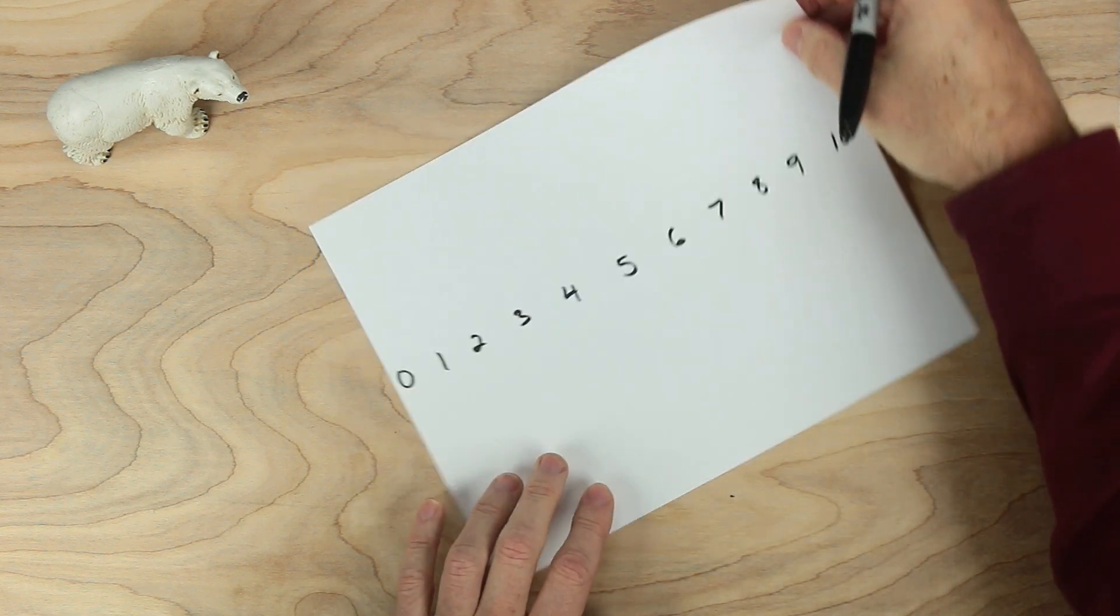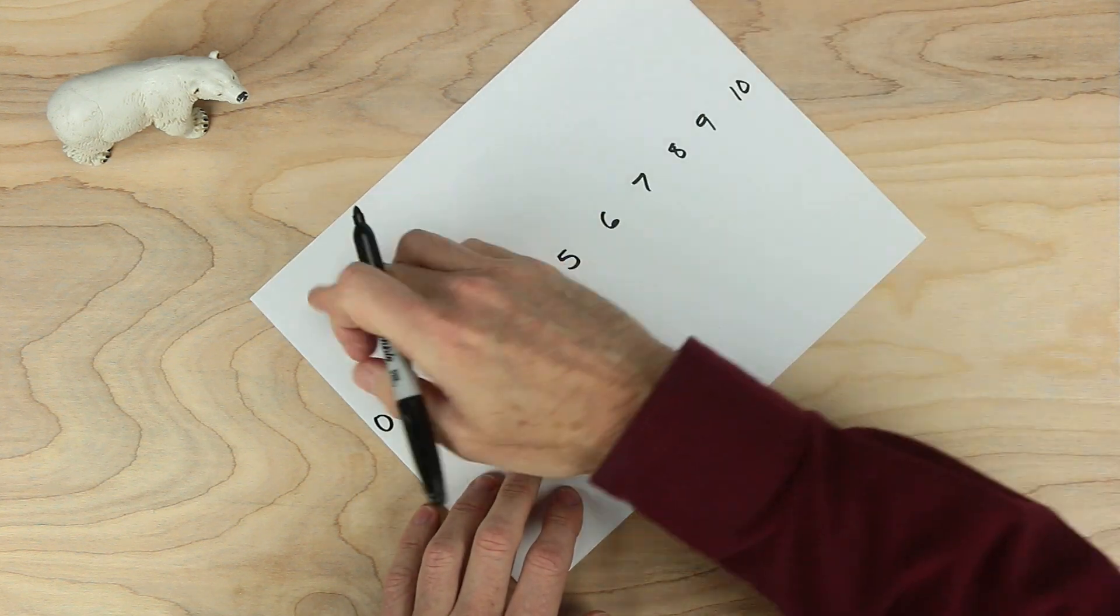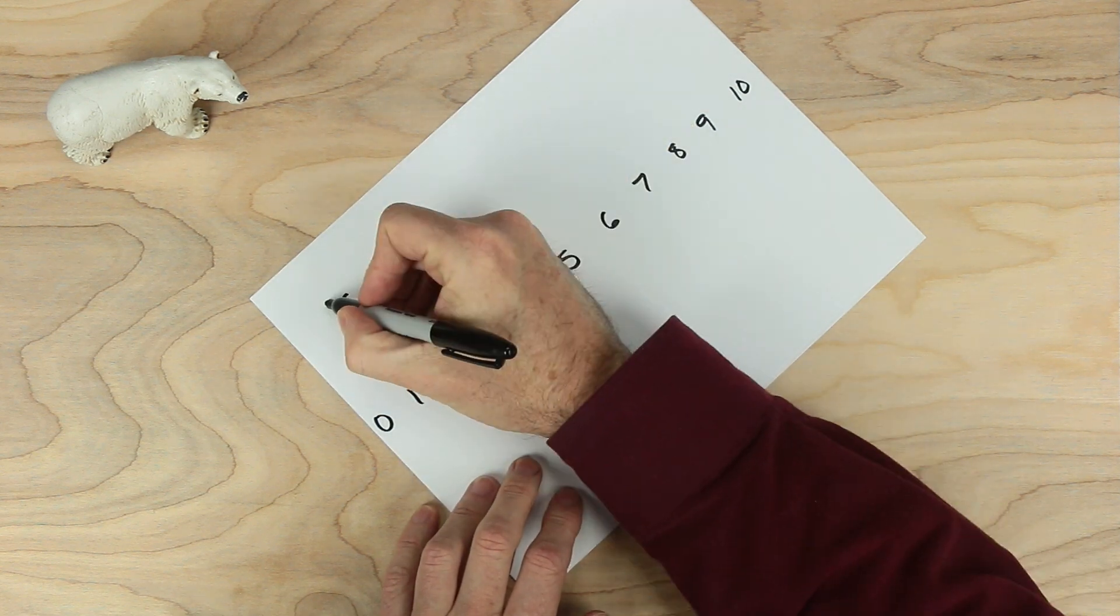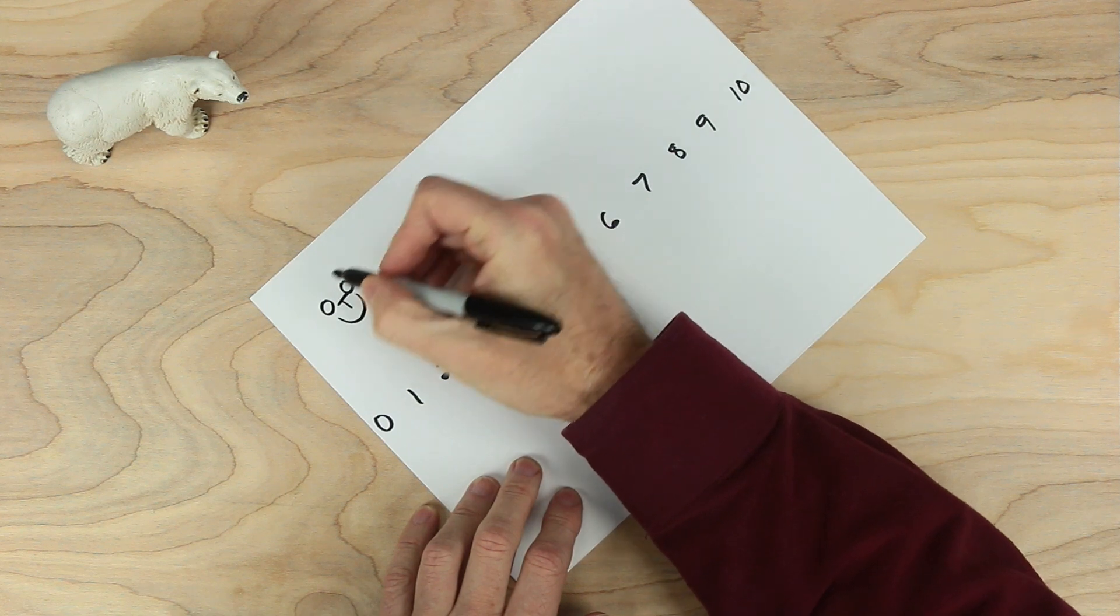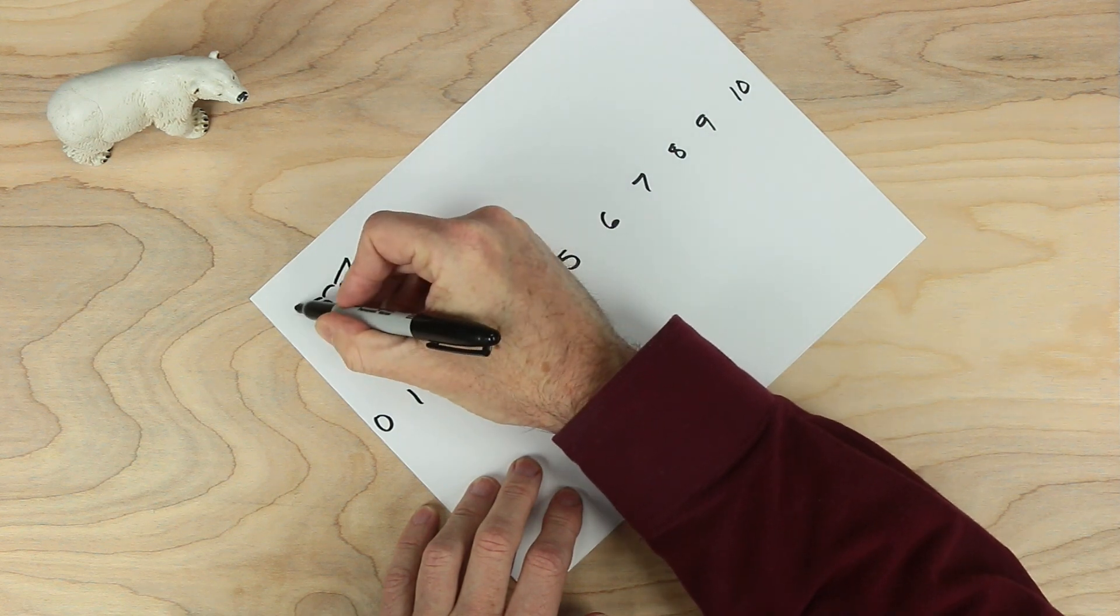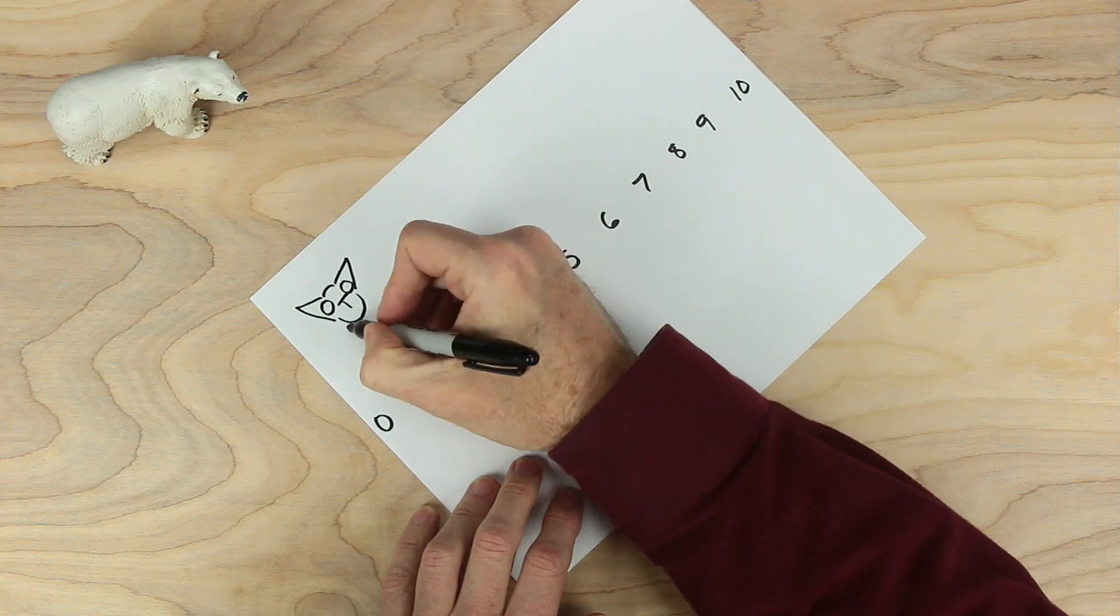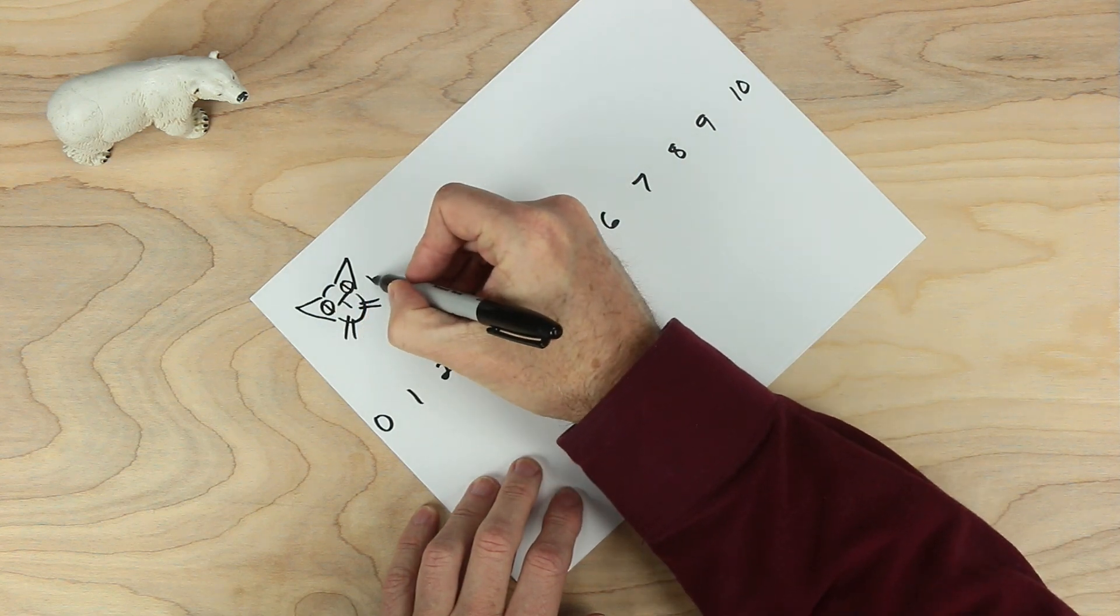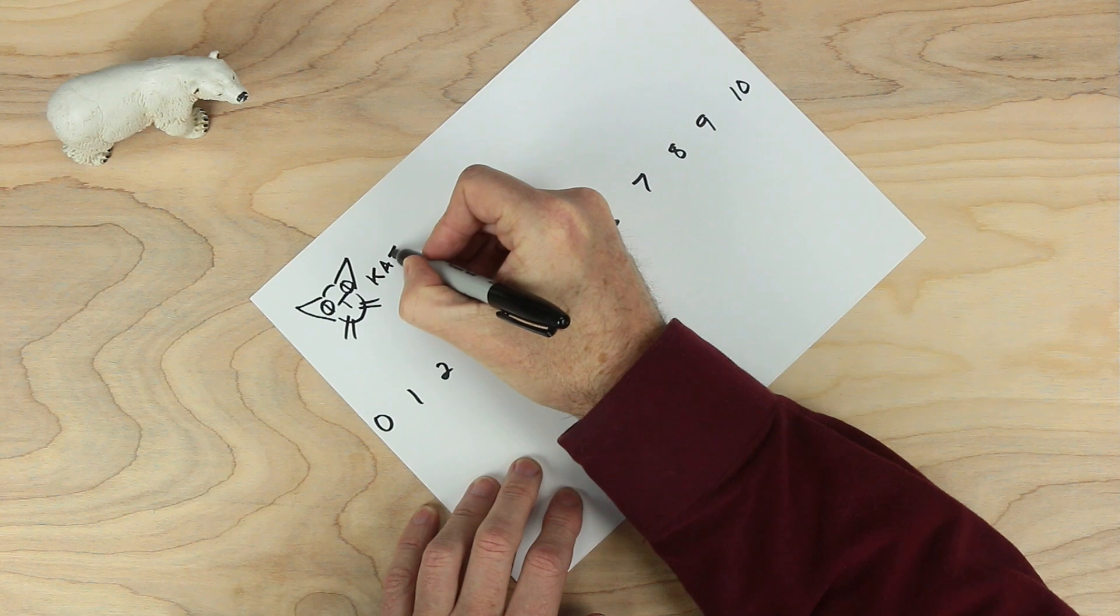And now we need a couple players. So in this corner up here, let's go ahead and put one player. A little bit of a T, a couple circles, curve below, curve above, maybe an angle out that way, another angle like that, a couple whiskers, and this player's name is Cat.